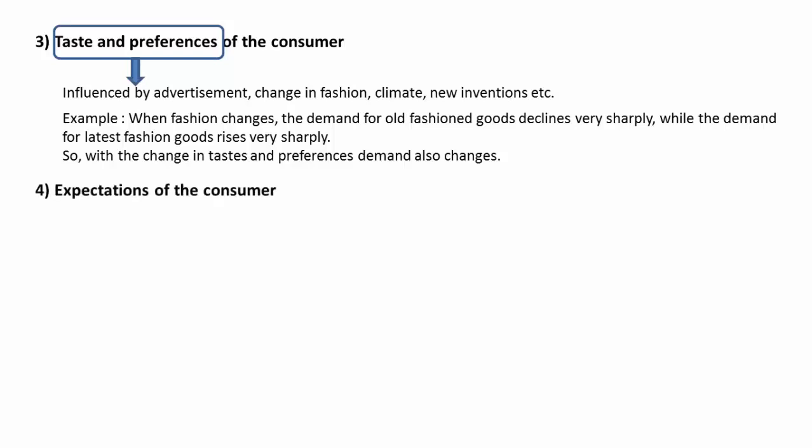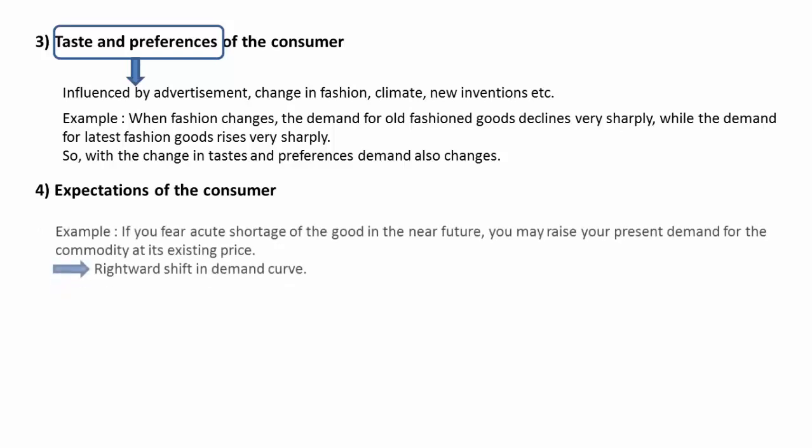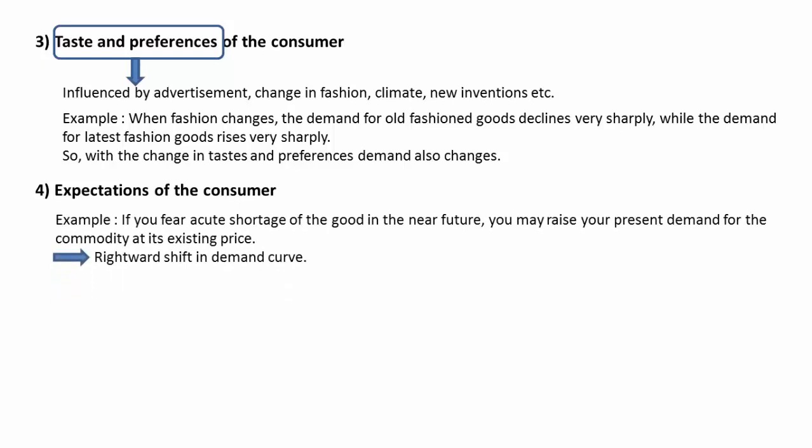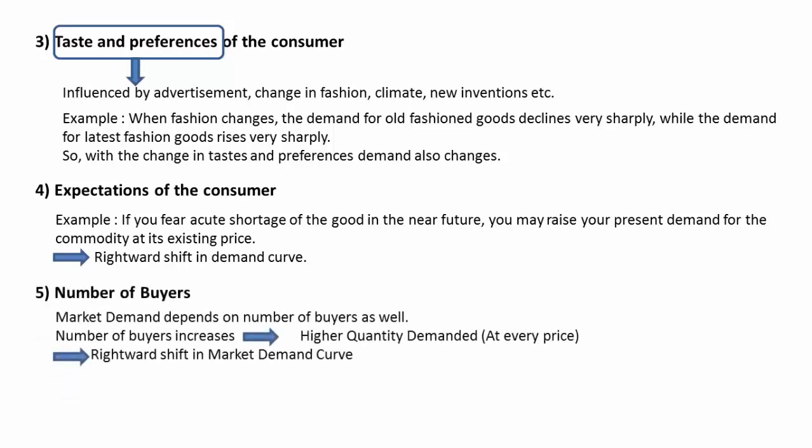Future expectations of the consumer also play a role in deciding how much of a good to buy today. For example, if you fear an acute shortage of the good in the near future, you may raise your present demand for the commodity at its existing price, leading to a rightward shift in the demand curve. In addition to the preceding factors which influence individual buyers, market demand also depends on the number of buyers. If the number of buyers increases, the quantity demanded would be higher at every price, leading to a rightward shift in the market demand curve.